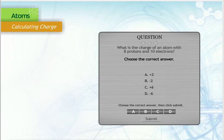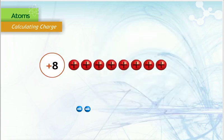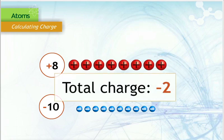What is the charge of an atom with 8 protons and 10 electrons? That is right! The correct answer is B, negative 2. 8 positive charges plus 10 negative charges equals 2 negative charges.